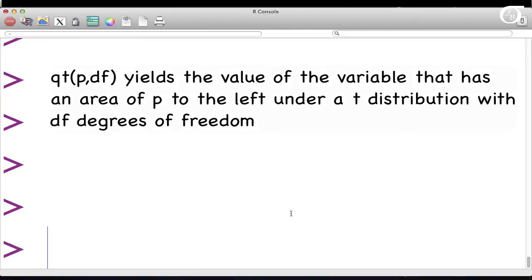The command Qt is going to get us those percentiles or quantiles. Qt gives the value of the variable that has the given area to the left under a t-distribution with the appropriate degrees of freedom.